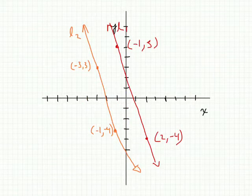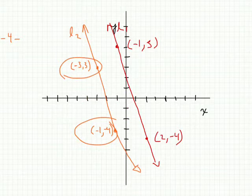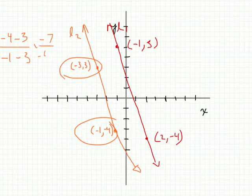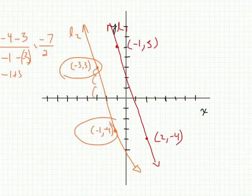Let's work with the orange line. We'll call the first coordinate and second coordinate. Slope is y2 minus y1 over x2 minus x1. That gives us negative 4 minus 3 over negative 1 minus negative 3, which simplifies to negative 7 over 2. So the slope went down 7 spaces across 2 — that's the slope of this line.